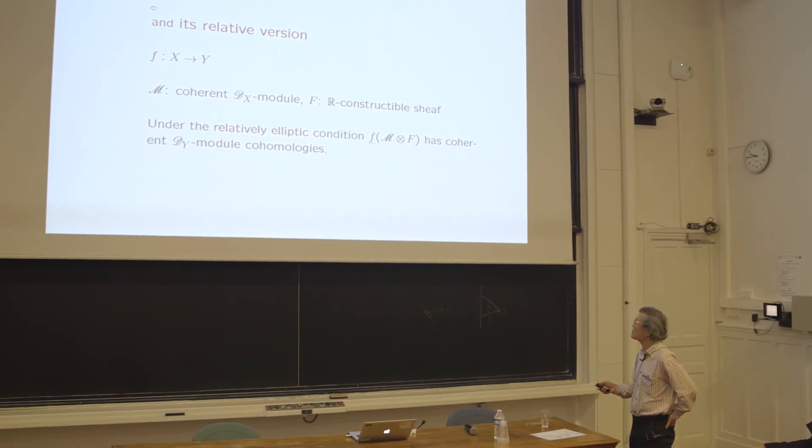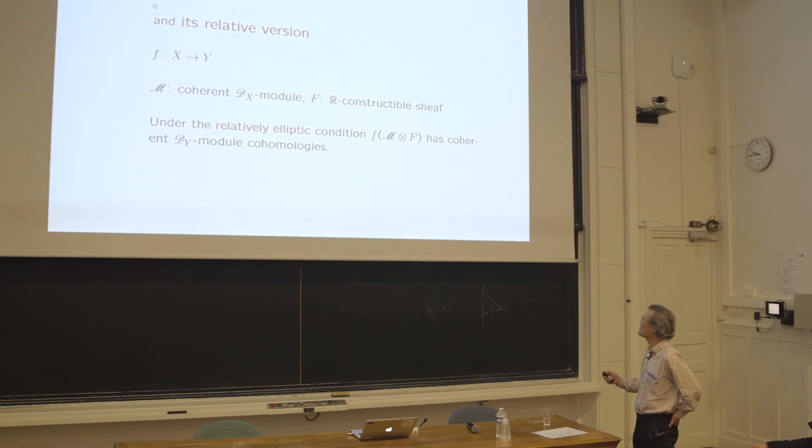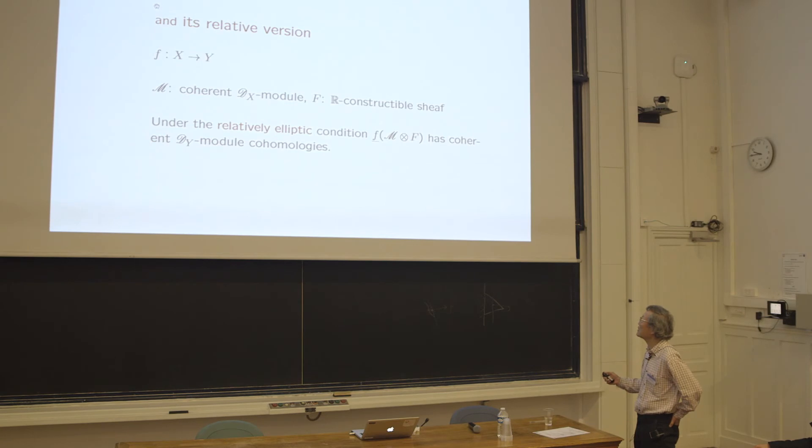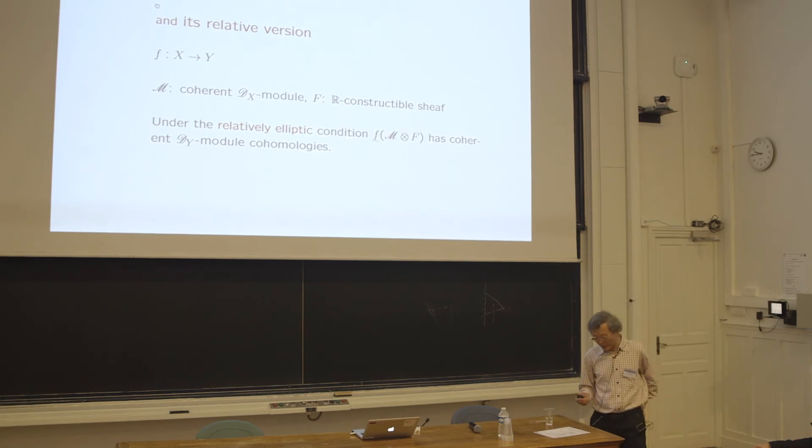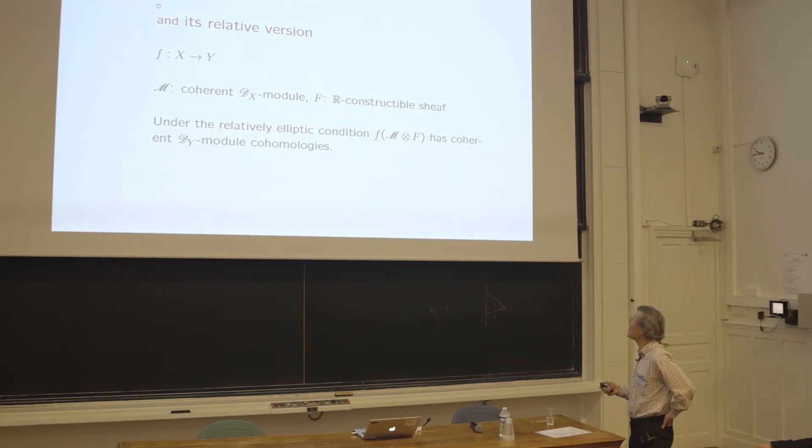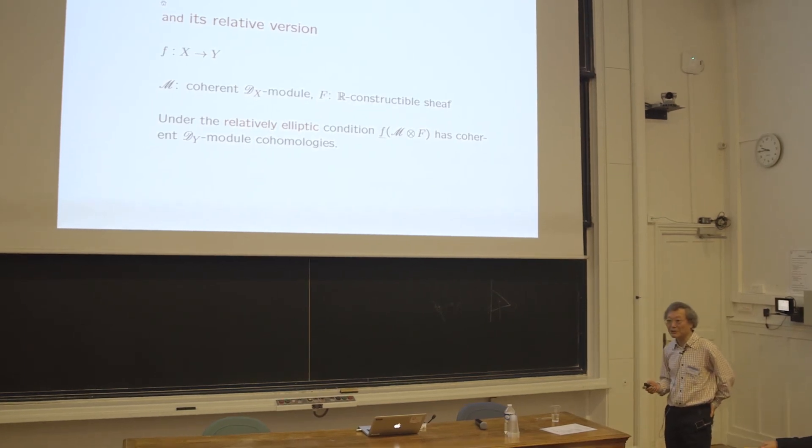You have a morphism F from X to Y, and you have D-module and R-constructible sheaves upstairs on X. Then you consider M tensor F, considered as D-module, and you consider the direct image as D-module. We assume some conditions, the relatively elliptic pair, then this one has coherent cohomologies. You can calculate, for example, the characteristic variety or the cycles starting from M and F. That is a very beautiful theory developed by Schneiders.